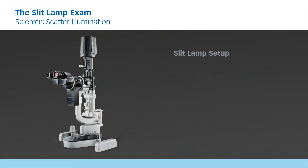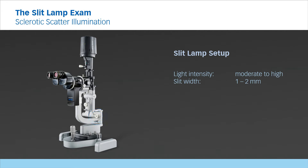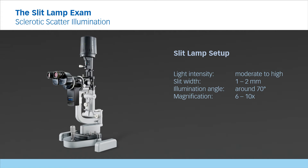To set up the slit lamp, choose a moderate to high light intensity and a slit width of 1 to 2 mm. Set the illumination angle to about 70 degrees and decouple the illumination tower. Choose a magnification of 6 to 10 times to ensure good depth of focus. For information on how to decouple the illumination tower, watch the movie Components of the Slit Lamp.